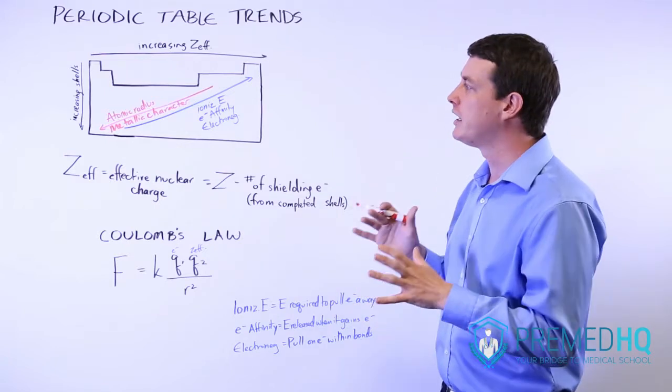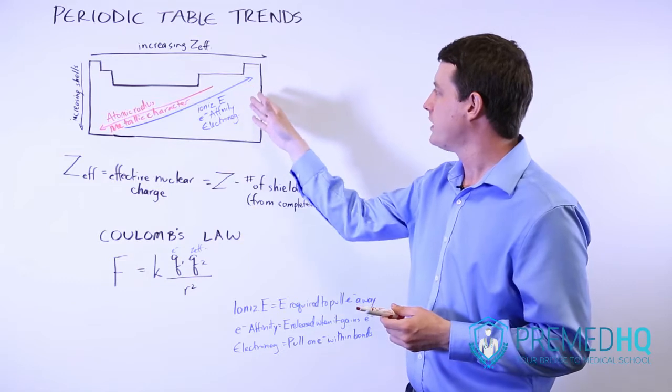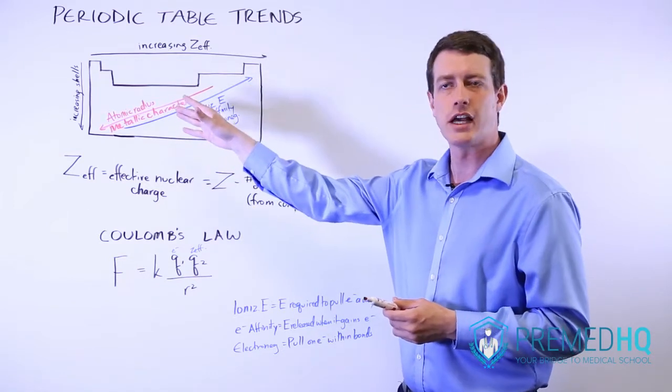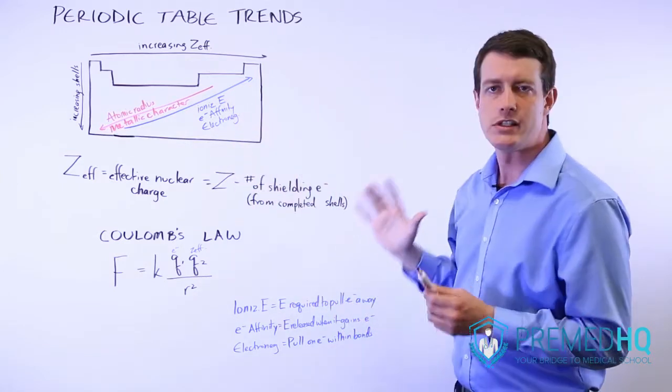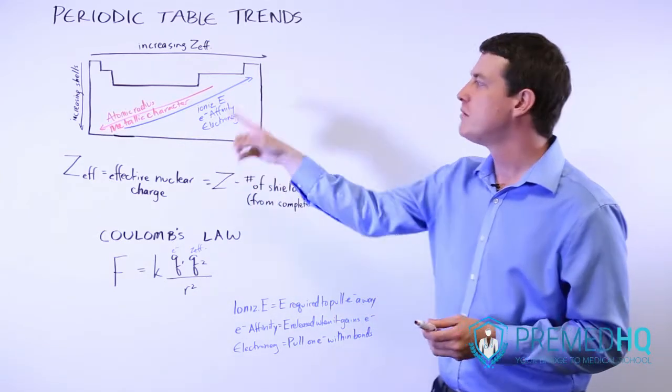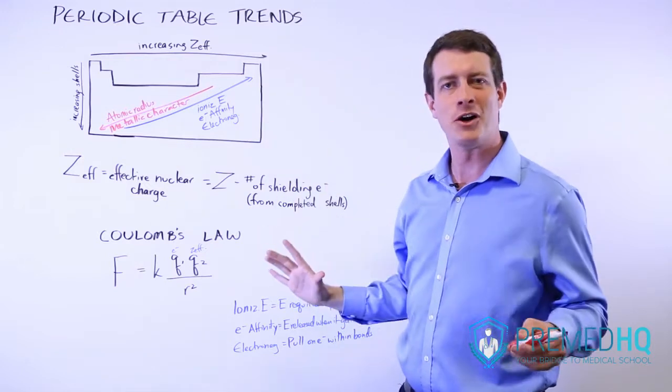There's a really simple way of figuring this out, and that is that whenever you complete an octet, that essentially becomes a set of shielding electrons. And so when you're in the first column here, that will only have a Z effective of one because it has one proton more than the number of electrons in already completed shells.